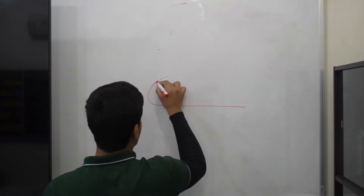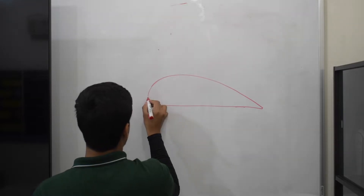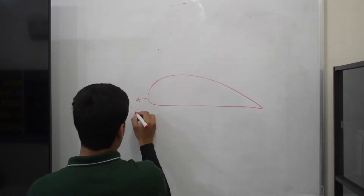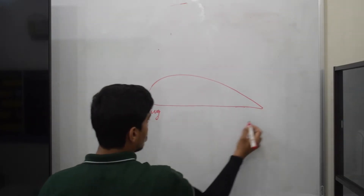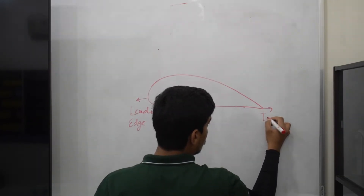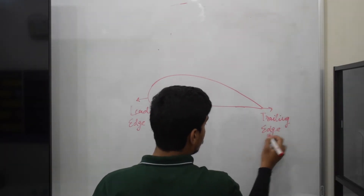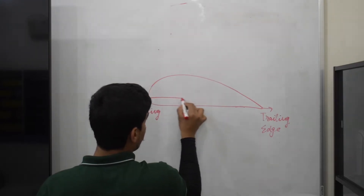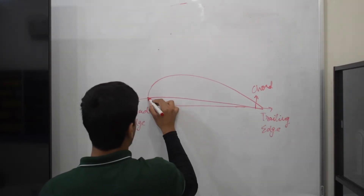Let's understand what causes lift. This is an airfoil shape used in wings and propellers — this is the shape of the aircraft wings when looked at from the side view. To understand how this water-drop shape can cause lift, let's learn a little more about the airfoil. The front side is called the leading edge, and the rear is called the trailing edge. A straight line drawn from the leading edge through the trailing edge is called the chord.